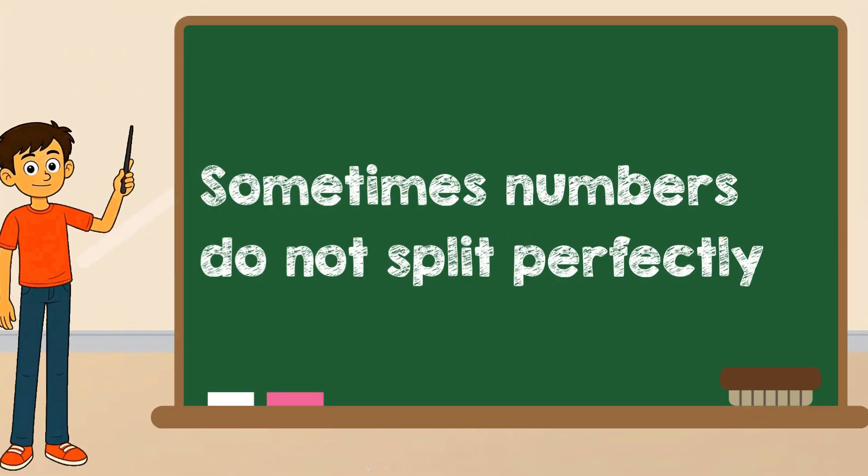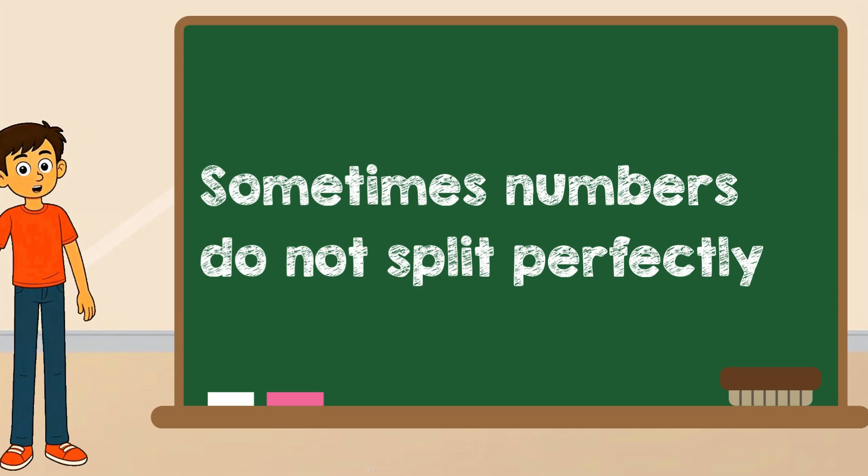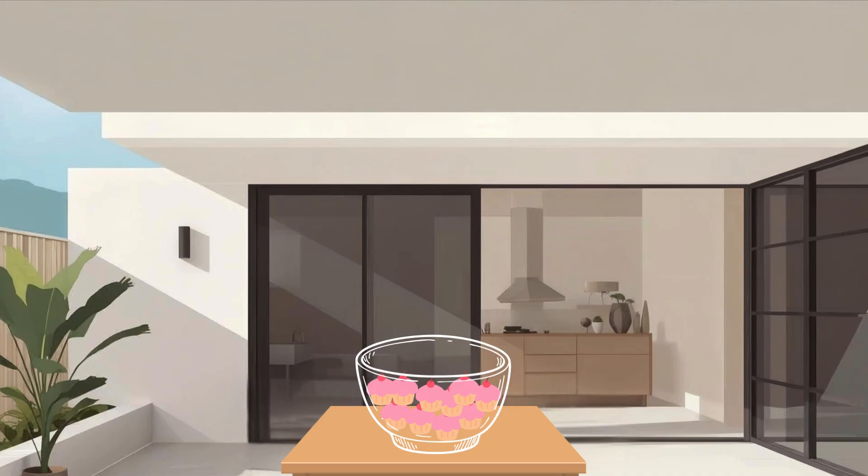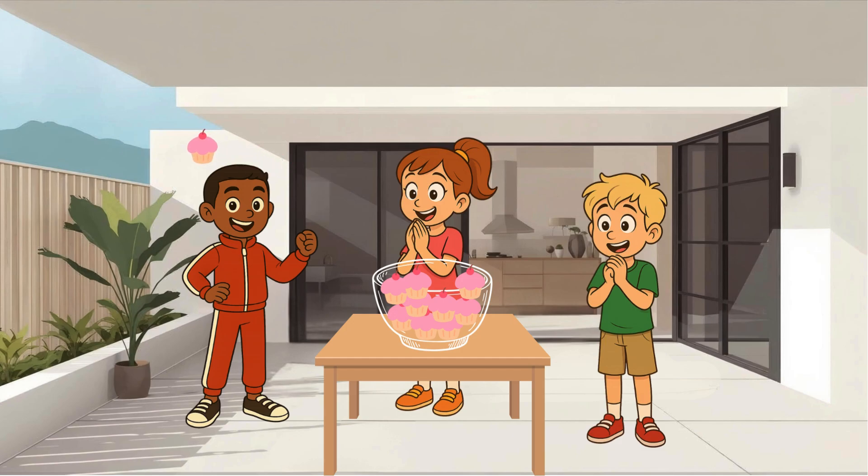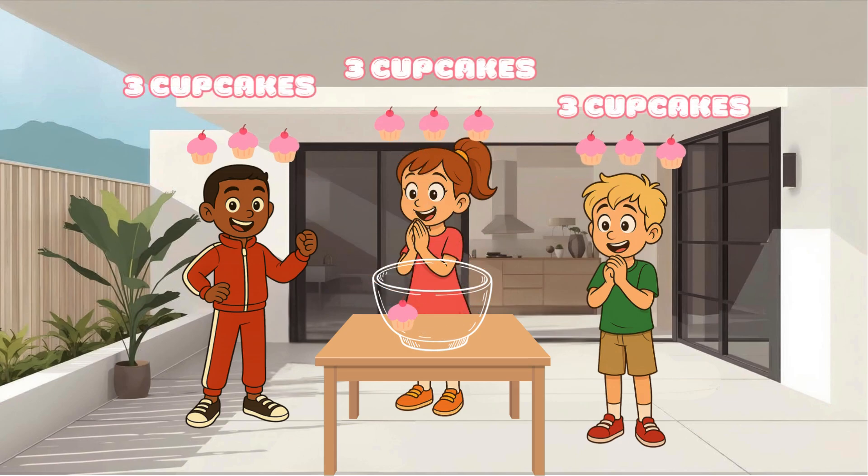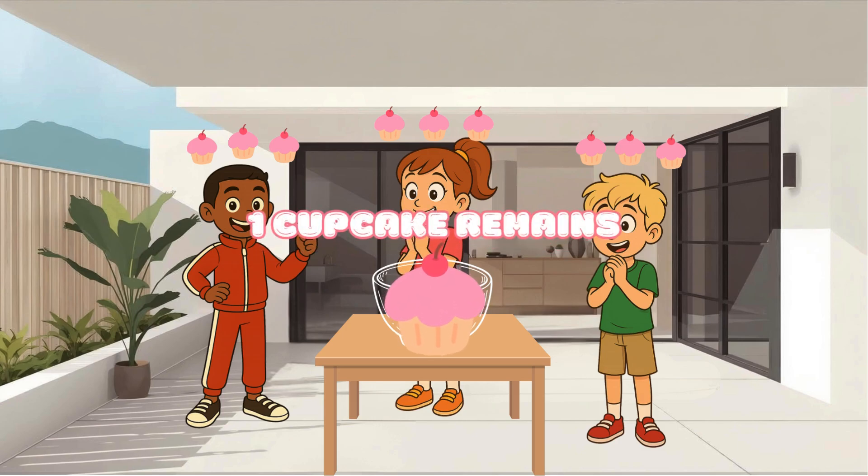Before we wrap up, let's talk about something new. Sometimes numbers don't split perfectly. Let's say we have ten cupcakes and three friends. We start sharing one for each. Again, again, again. Each friend ends up with three cupcakes, but one cupcake is left over.